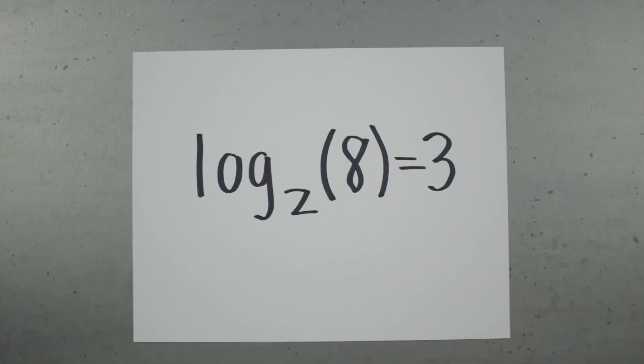This is a logarithm. This little number is called the base. This number is called the argument. This is the answer.